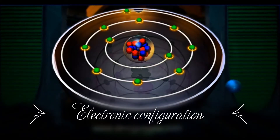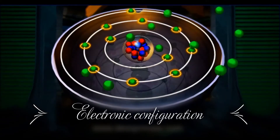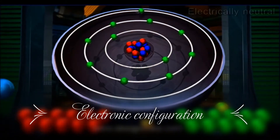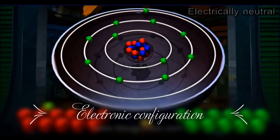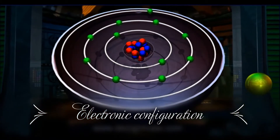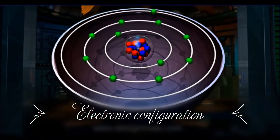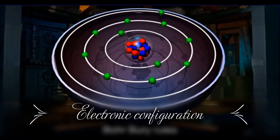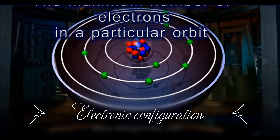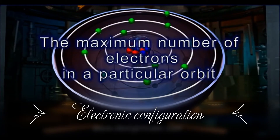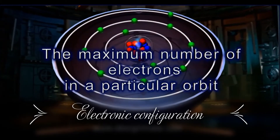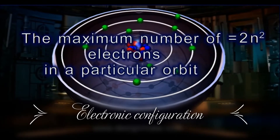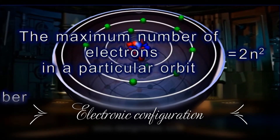The number of electrons in an atom is always equal to the number of protons, which makes the atom electrically neutral. Every orbit has a certain capacity to accommodate electrons. According to the Bohr-Bury rules, the maximum number of electrons that can be accommodated in a particular orbit is determined by the formula 2n², where n denotes the orbit number.